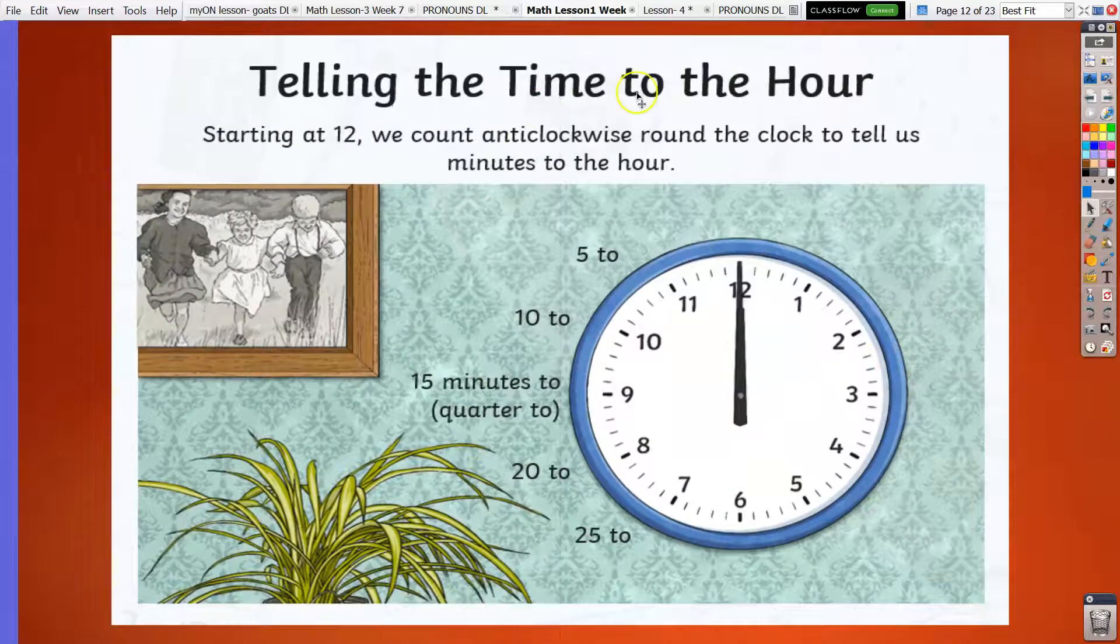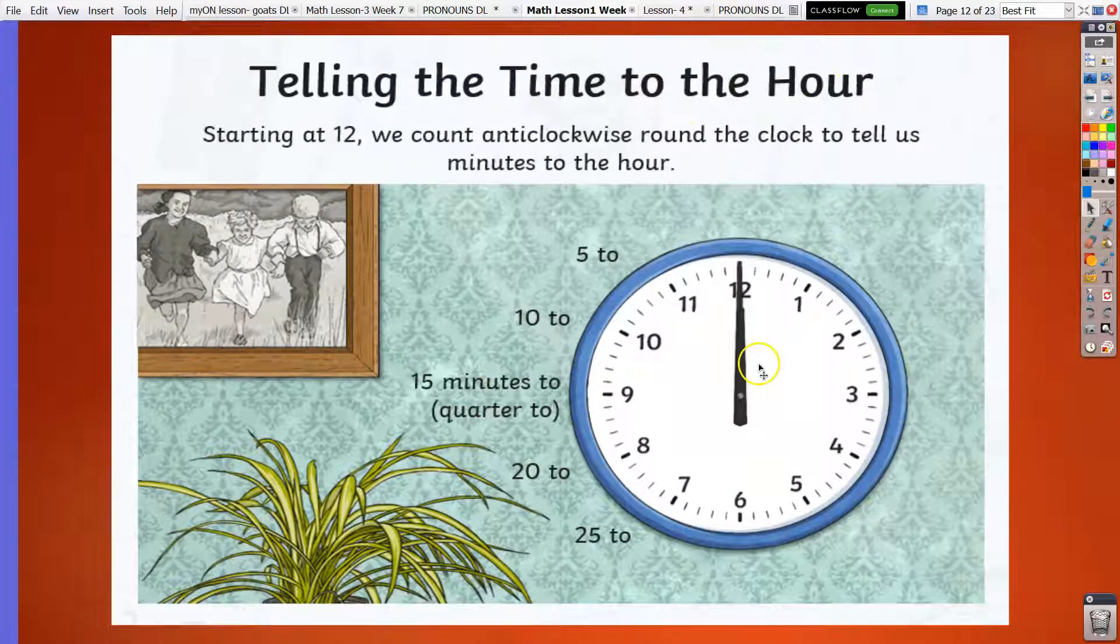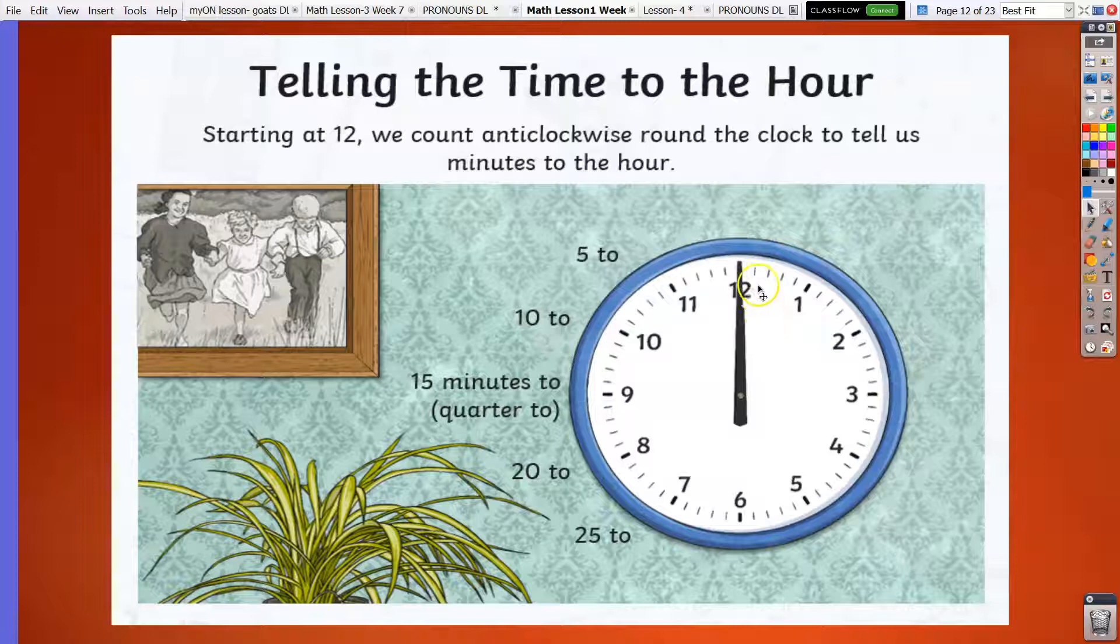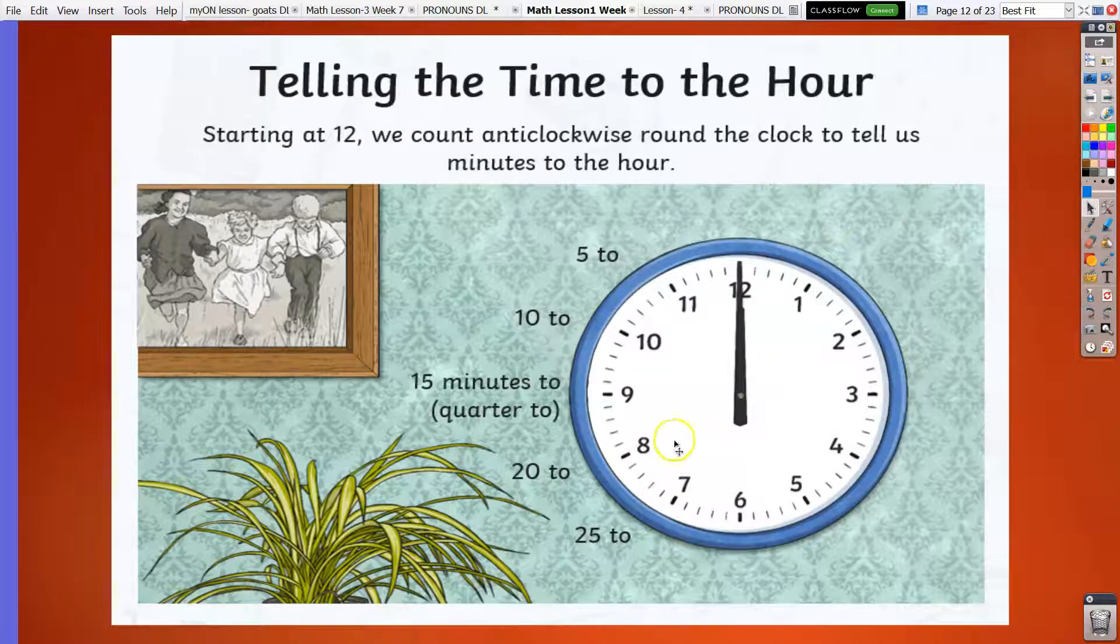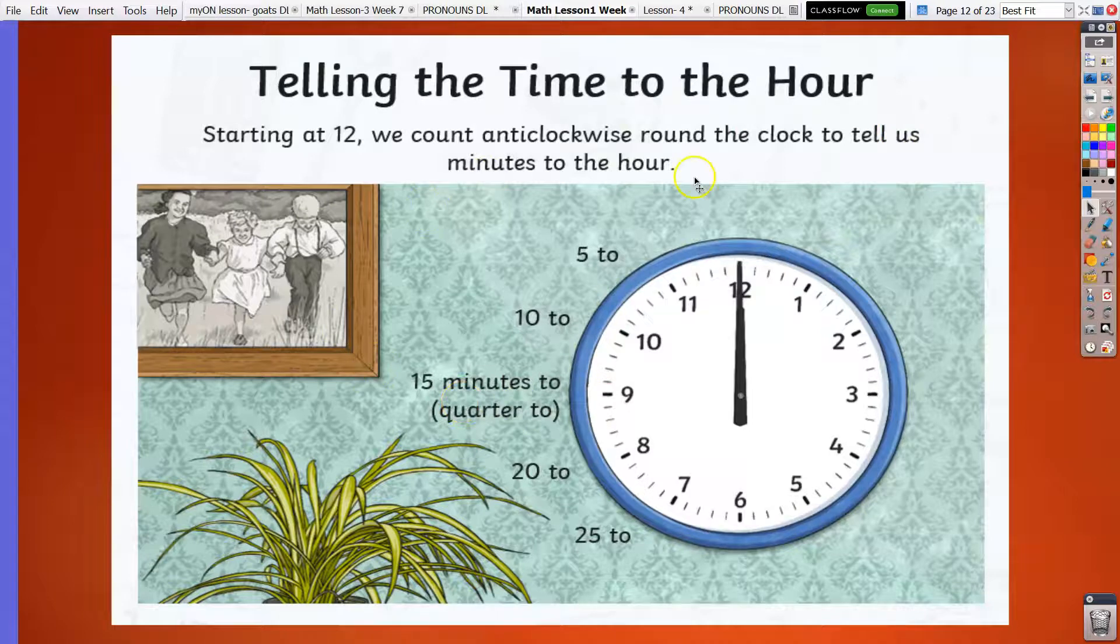Now, let's have telling the time to the hour. Starting at 12, we count anti-clockwise or backward round the clock to tell us the minutes to the hour. Again, the same pattern. Each number is 5 minute intervals, or you count it by 5 times table. 5, 10, 15. This time, we don't say past. We say it to, or to the hour. That means we have to say the next hour on the clock.